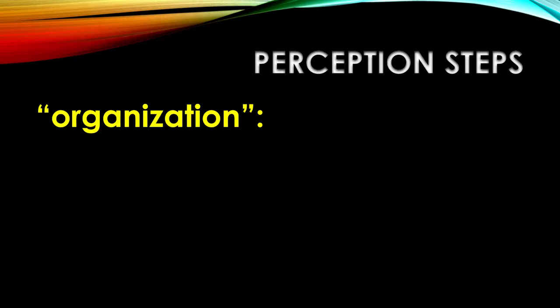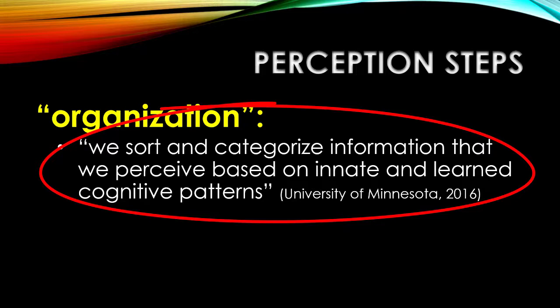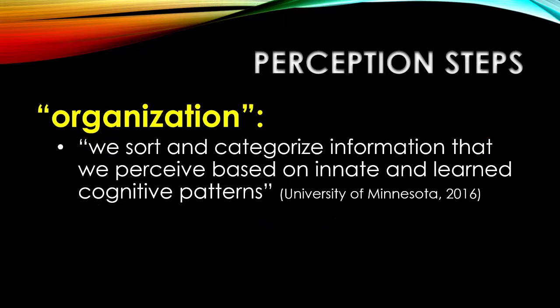After selection, the next stage of the perception process is organization. We've got all of this sensory data that has already been curated by the contextual screen of the perception process — we've only paid attention to certain pieces of data. Once that data gets through, the next step is to sort and categorize information based on innate and learned cognitive patterns. Over the course of our lives, as we observe the world and communicate with different kinds of people, we observe and recognize patterns, and then we start putting data into a variety of different cubbyholes — places in a computer database in our mind, if you will. There's going to be information we save up based on the kinds of things that we think we know about people.